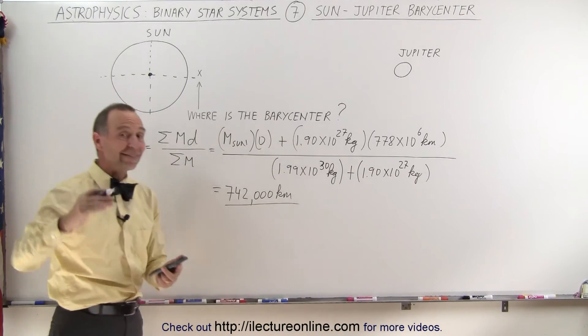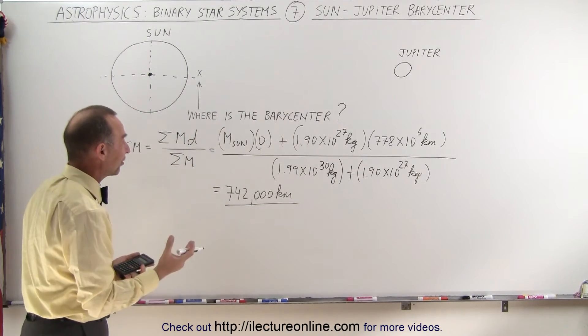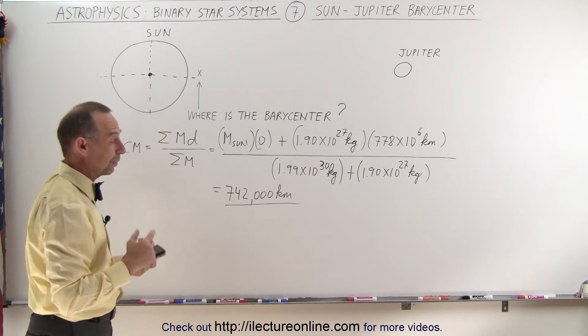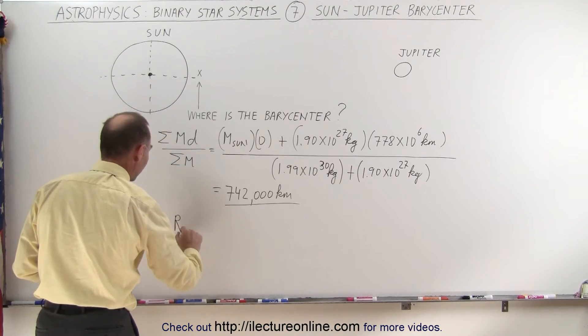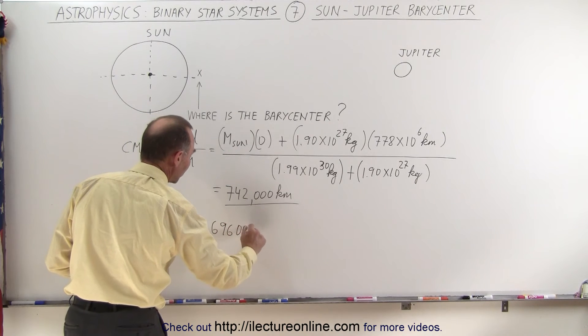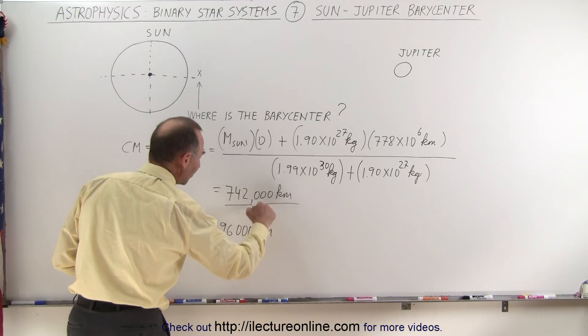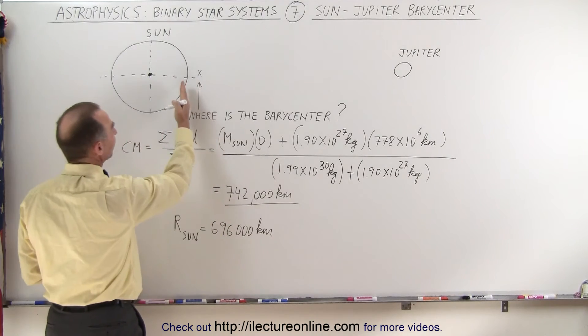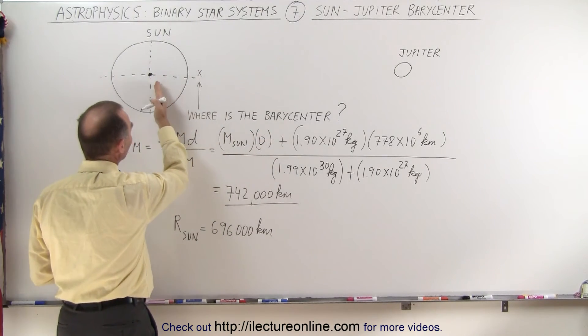Now, does that place it inside the Sun or outside the Sun? Well, it turns out that the radius of the Sun is equal to about 696,000 kilometers. So you can see, since this is bigger than this, the barycenter between the Sun and Jupiter is actually outside the Sun.